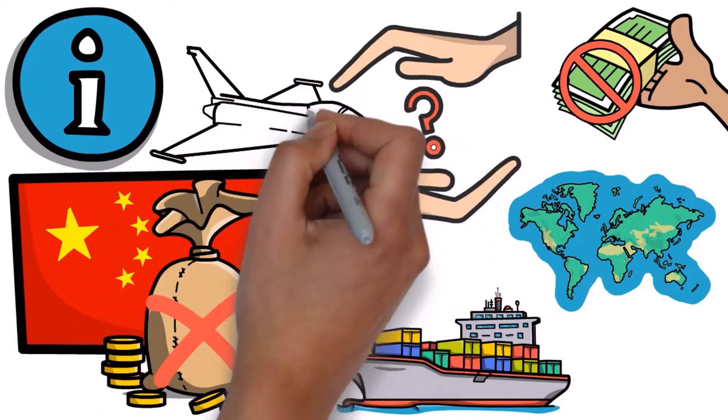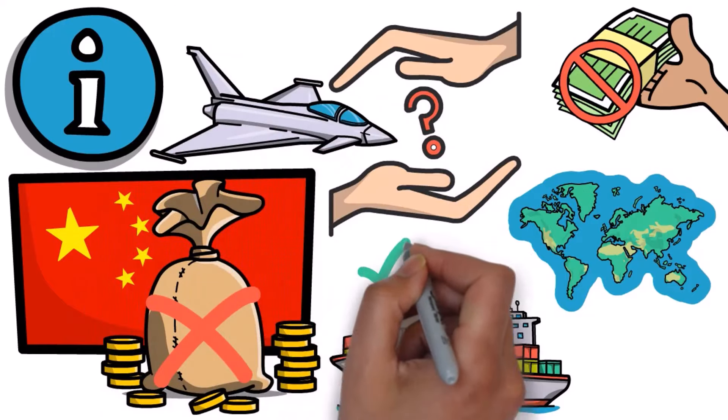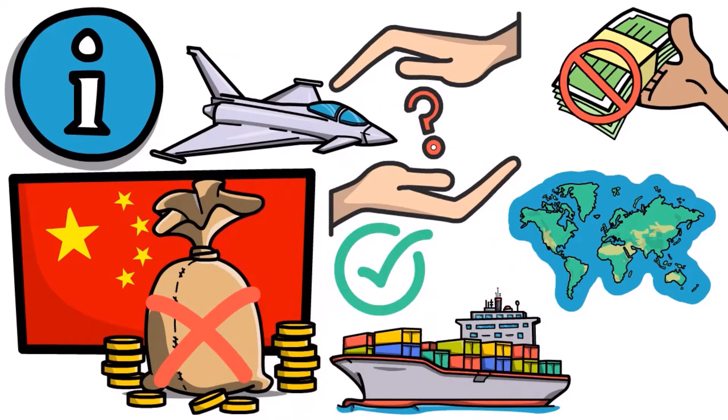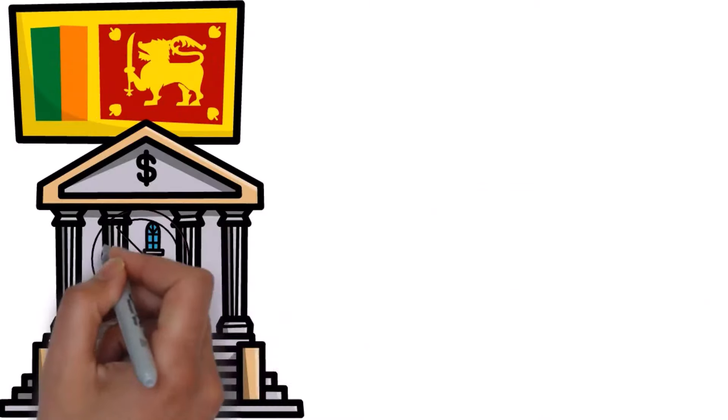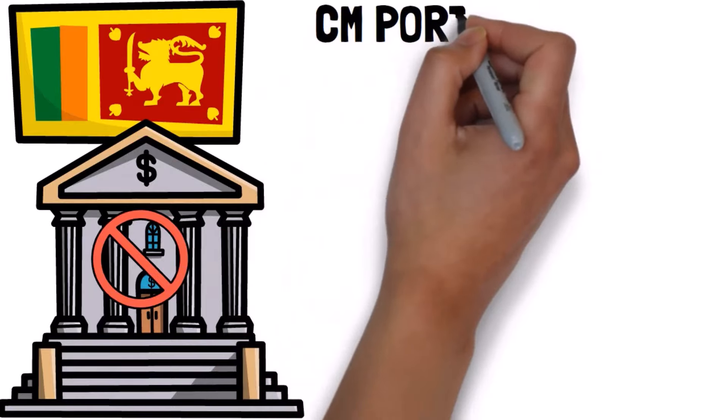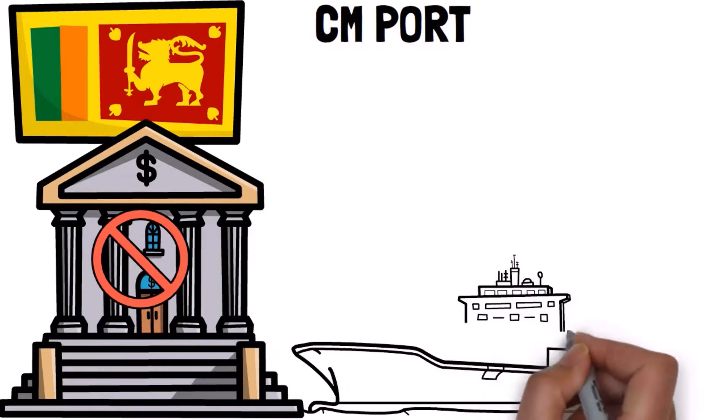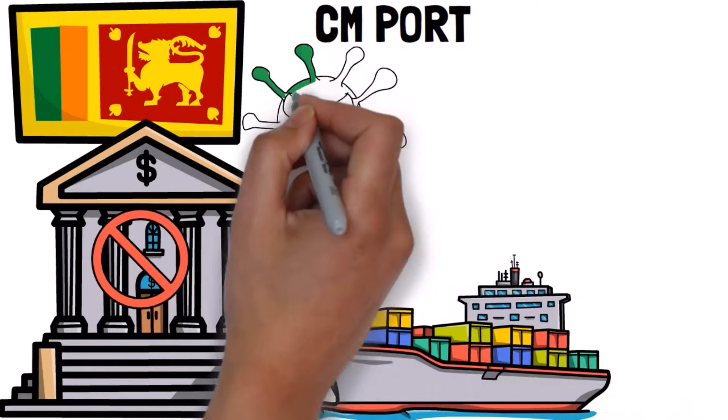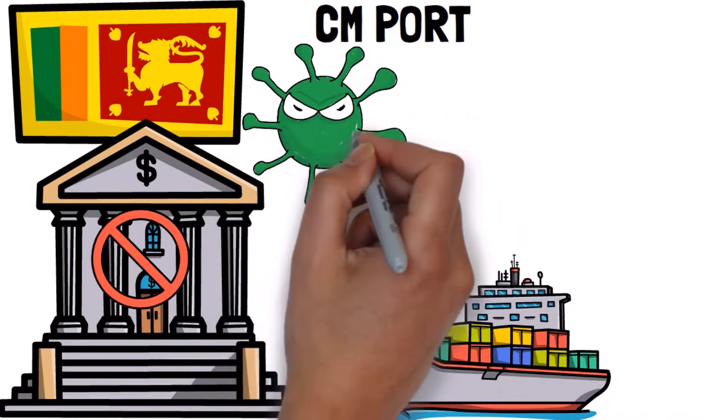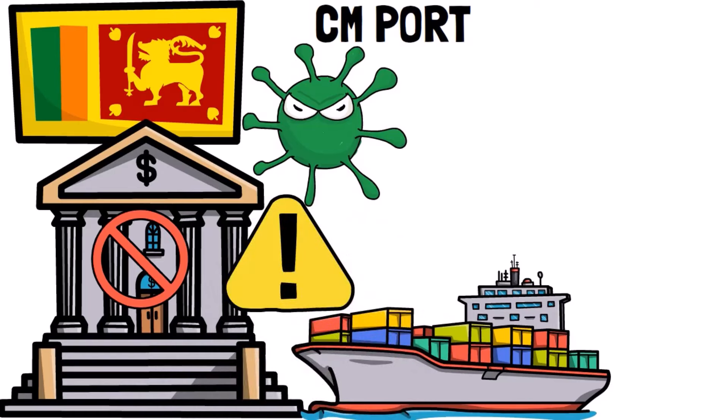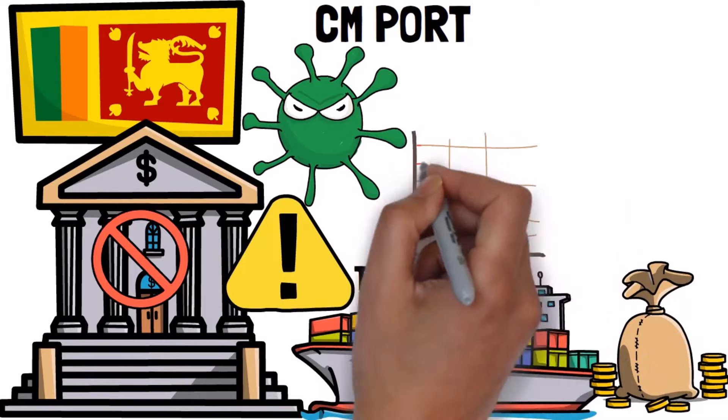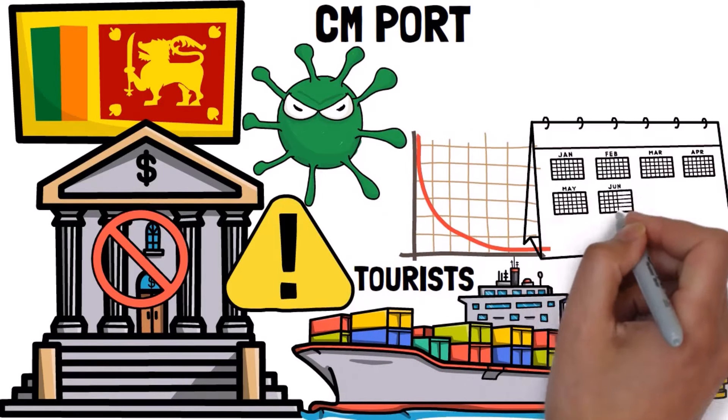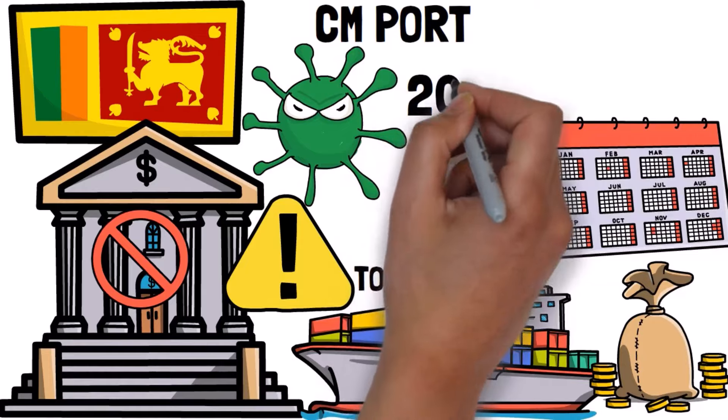Before you know it, China ends up with military bases and crucial ports in countries that owe them money. Take Sri Lanka, for example. They couldn't manage their debt to China, so a Chinese government-owned company called CM Port took control of the Hambantota port on a lease. Then, when COVID-19 hit, things got even worse for Sri Lanka. They had fewer tourists, and they had to spend more on energy. It got so bad that Sri Lanka's economy collapsed, and they had to ask the IMF for help in 2022.